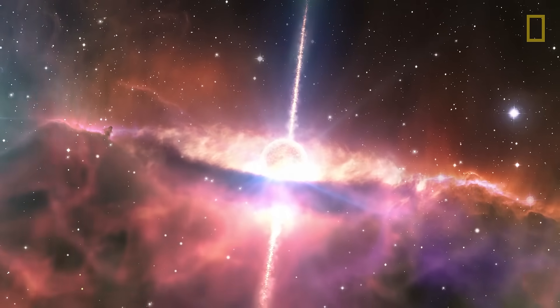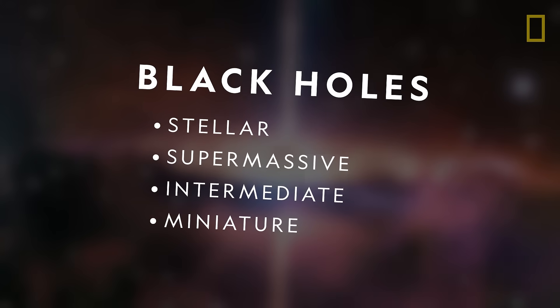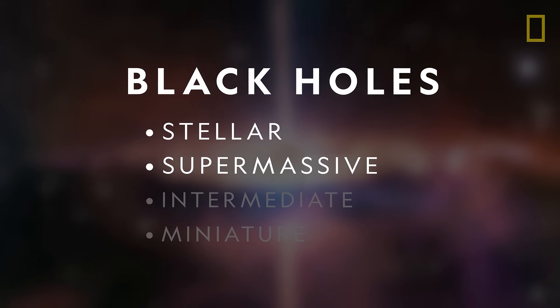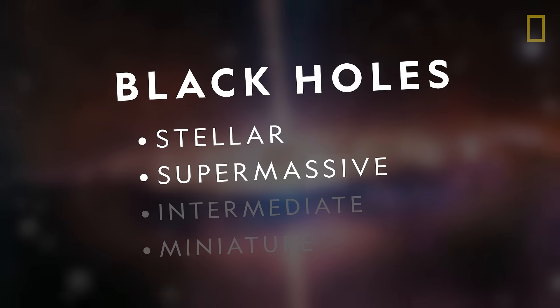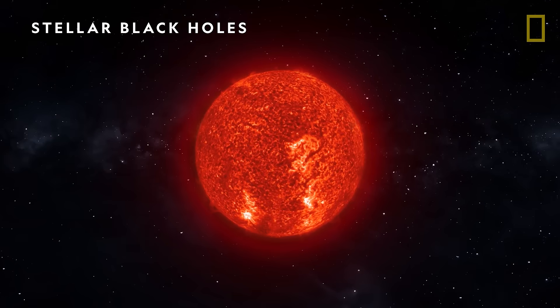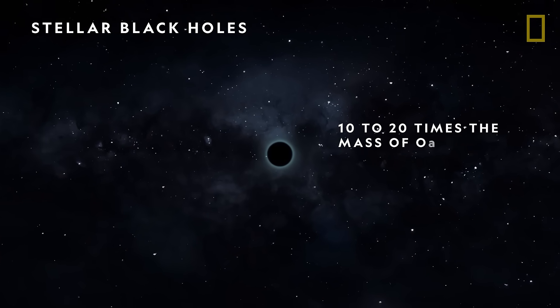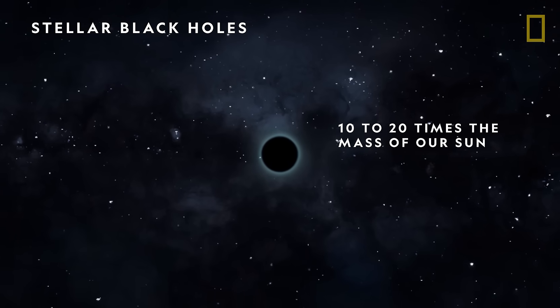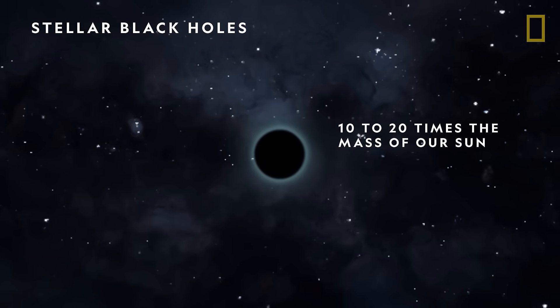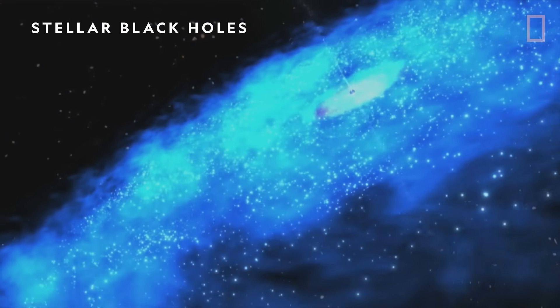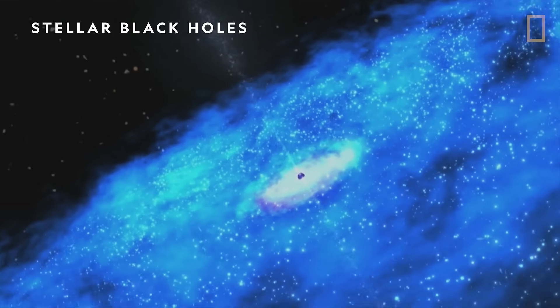Scientists have theorized several different types of black holes, with stellar and supermassive black holes being the most common. Stellar black holes form when massive stars die and collapse. They're roughly 10 to 20 times the mass of our sun, and scattered throughout the universe. There could be millions of these stellar black holes in the Milky Way alone.